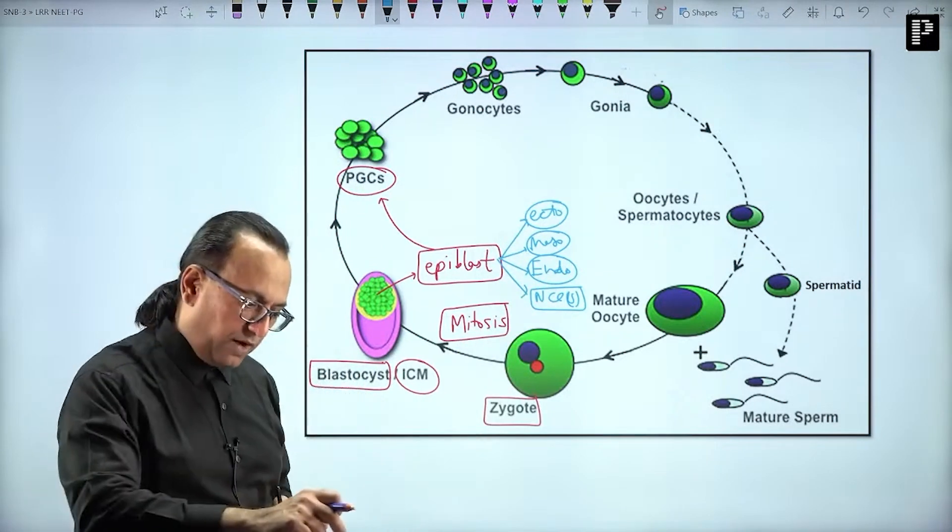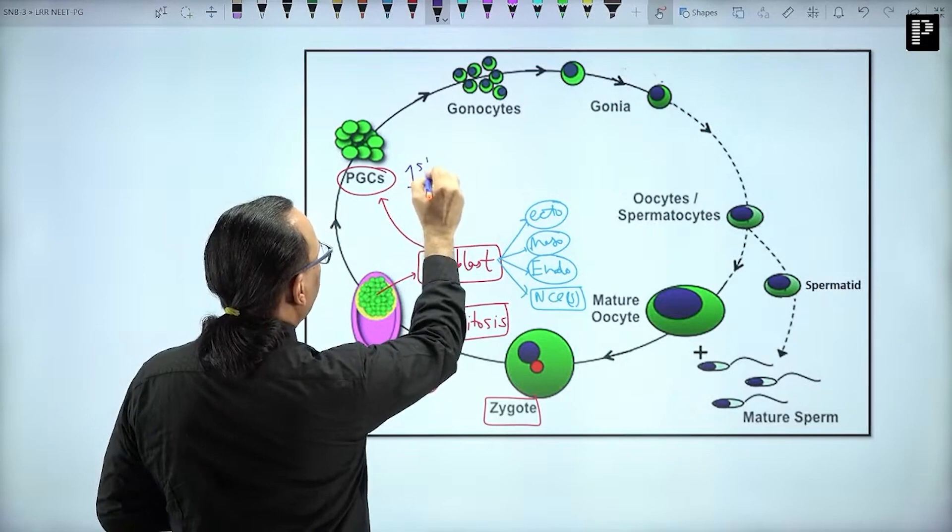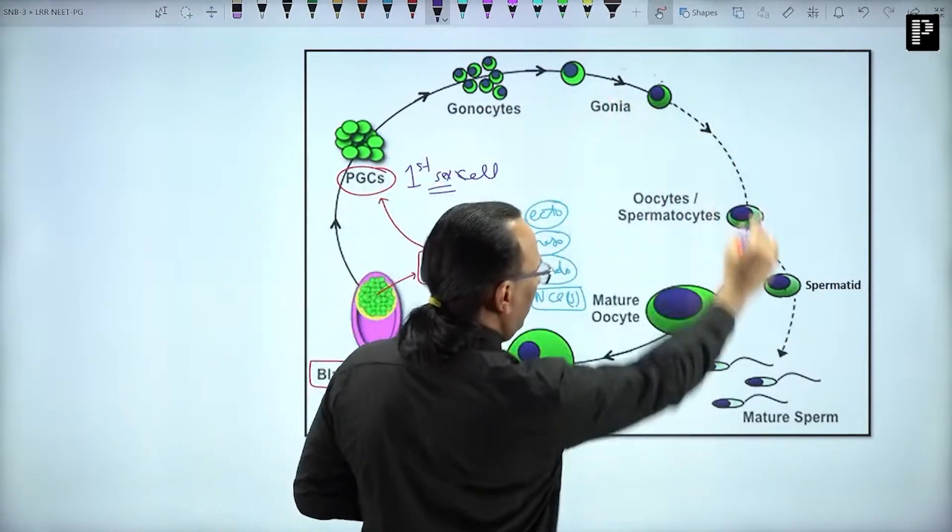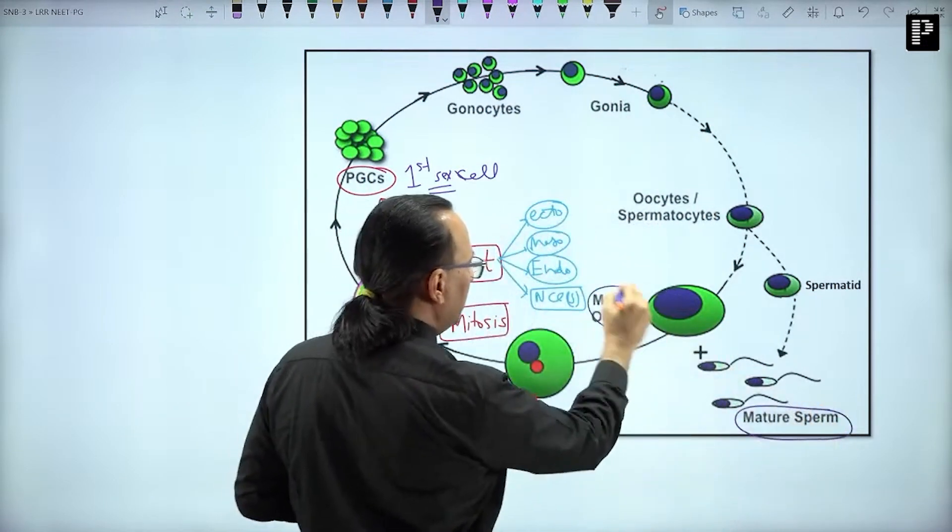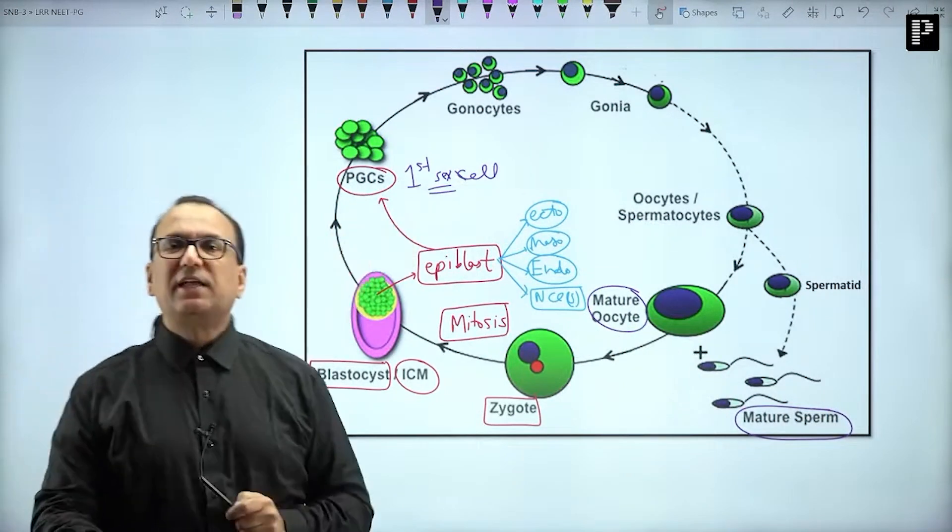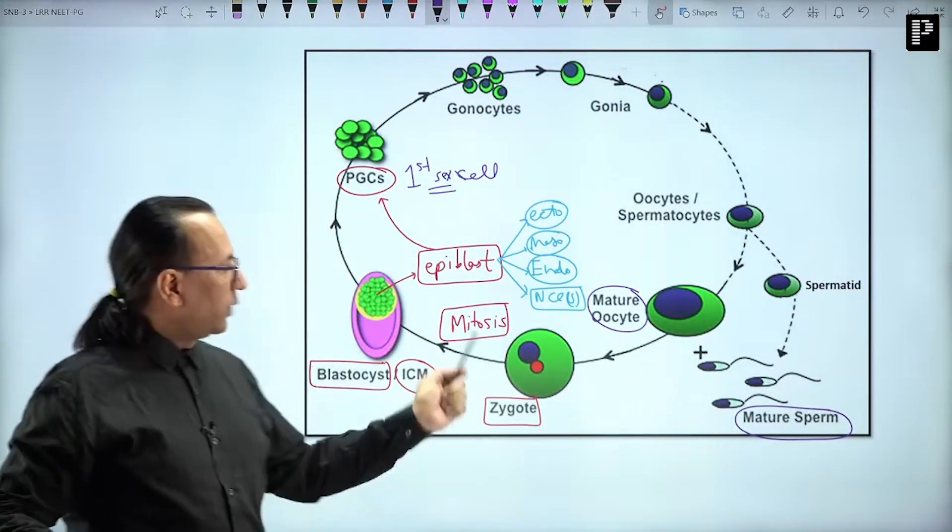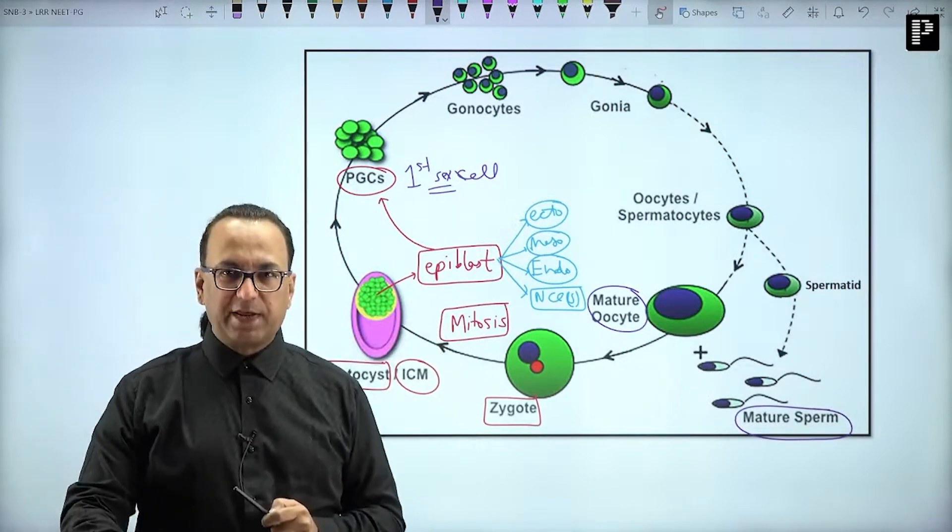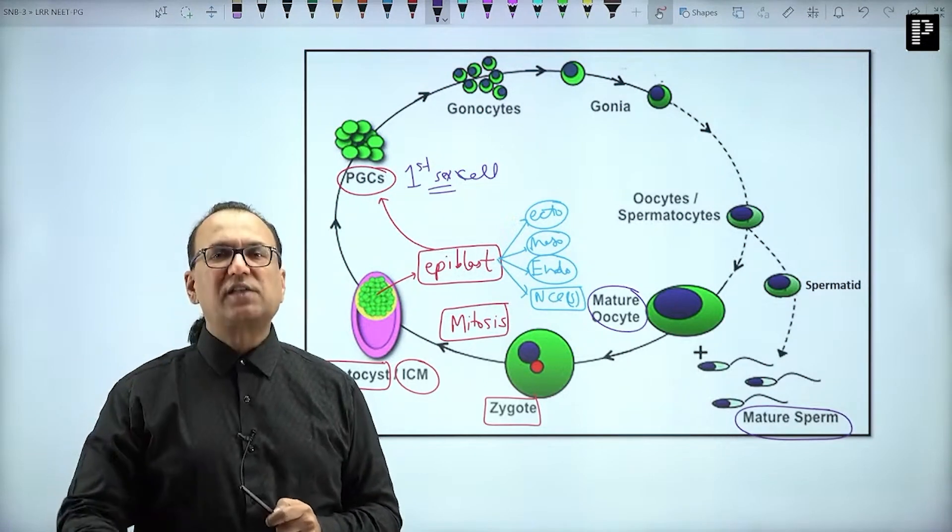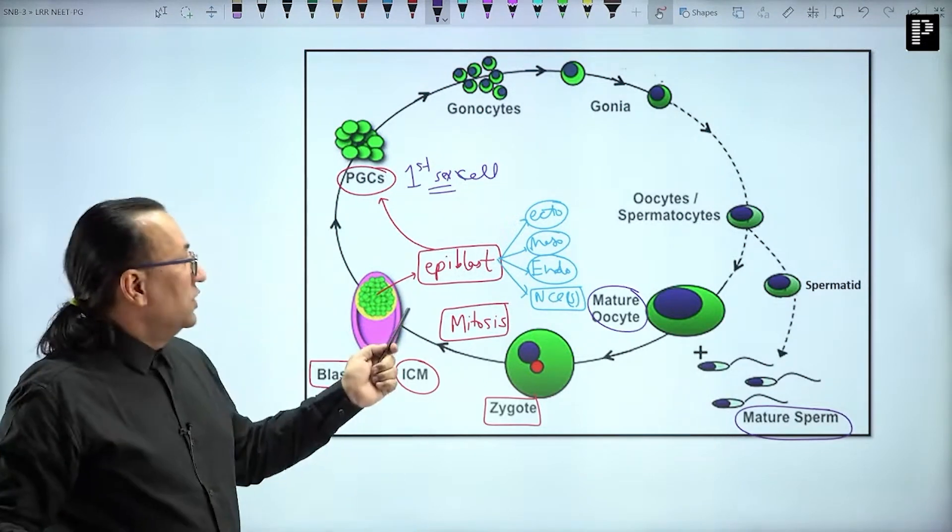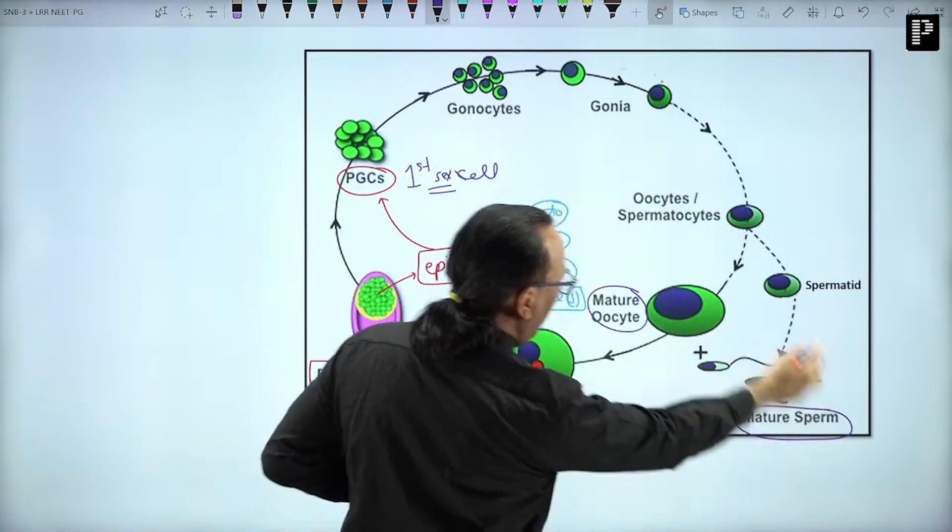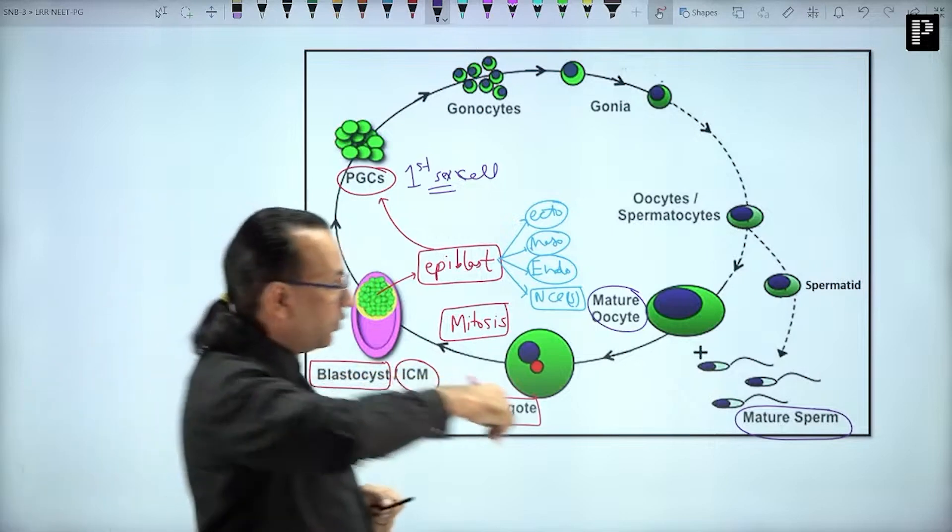As you proceed further, the primordial germ cell is the first sex cell of our body, and it is going to form either the sperms or the oocyte. How do you decide whether the primordial germ cell, which is the first sex cell of our body, will become mature sperm or oocyte? It is depending upon the Y chromosome.